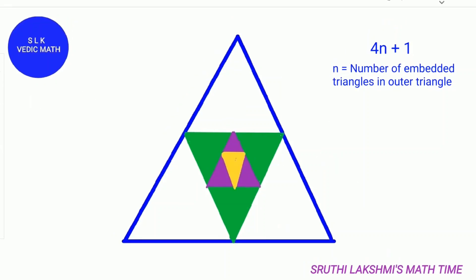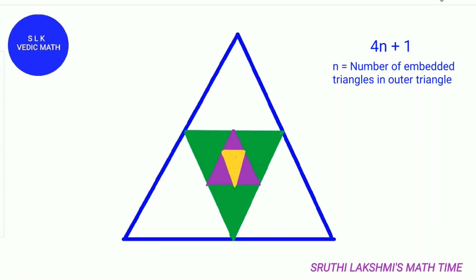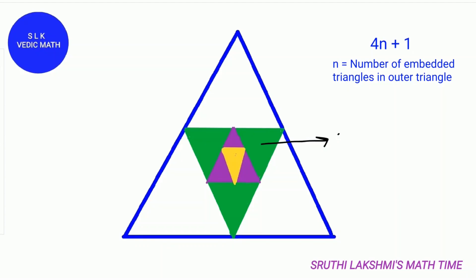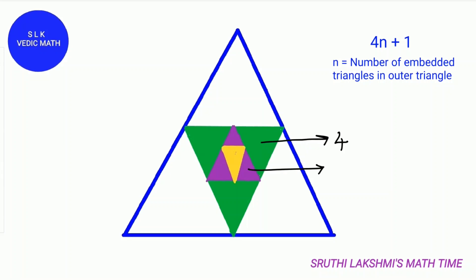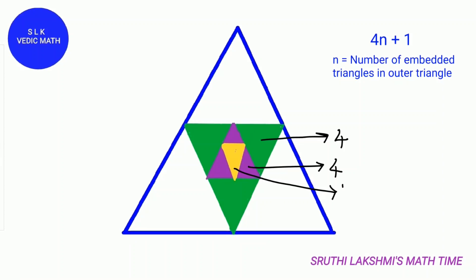Let's try this figure. In this figure there are 3 Embedded Triangles. This Embedded Triangle has 4 triangles. This one also has 4 triangles. And this Embedded Triangle also has 4 triangles.